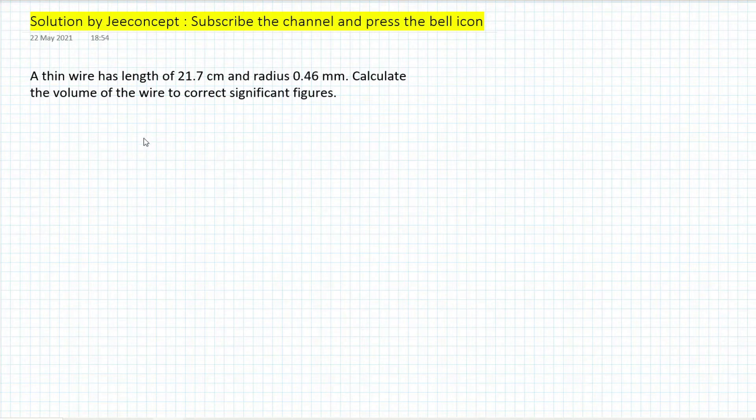So given is, let's say length of wire is 21.7 cm. Now the radius is given as 0.46 mm. Now we will convert this mm into centimeter, so this will become 0.046 cm.